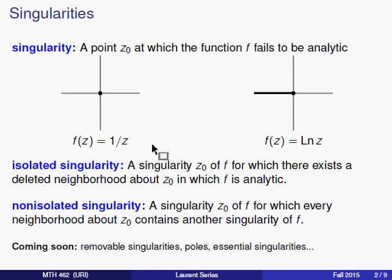An isolated singularity is defined as a singularity for a function for which there is a deleted neighborhood about that point in which f is analytic. As an example, consider the point 0 for the function 1/z. The function is not analytic at 0, but if we look at a small neighborhood about 0, then for every point in that neighborhood except 0 itself, the function is analytic. Therefore this point satisfies our definition of isolated singularity.